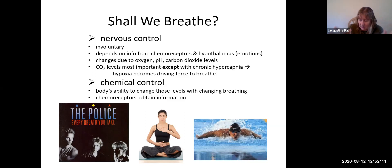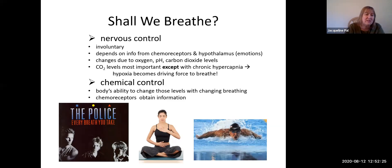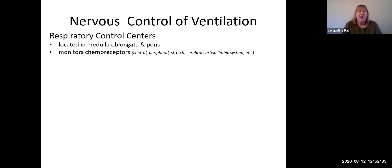The chemical control is the body's ability to change those levels without changing the breathing, and the chemoreceptors obtain that information. This is where our equation comes into play to change your behavior. Let's talk about the nervous control of ventilation because we have various respiratory control centers.